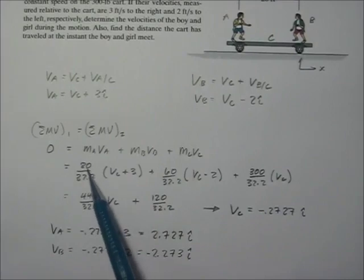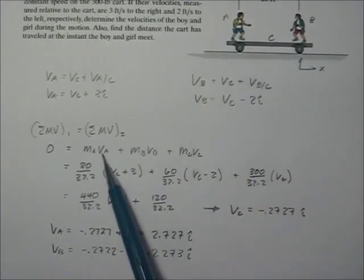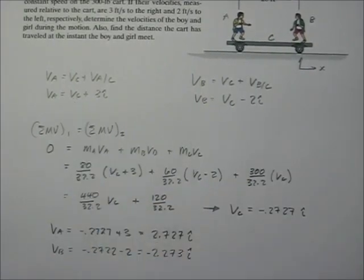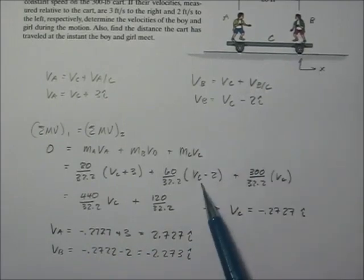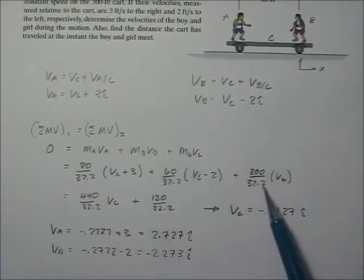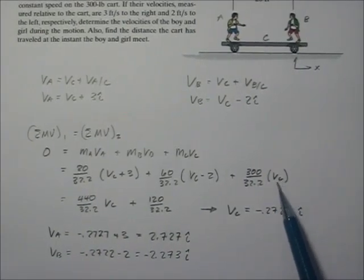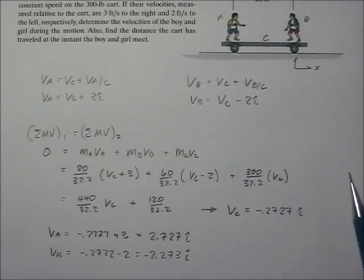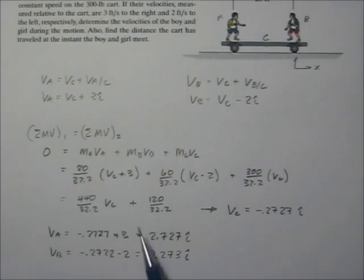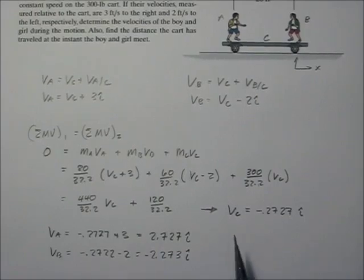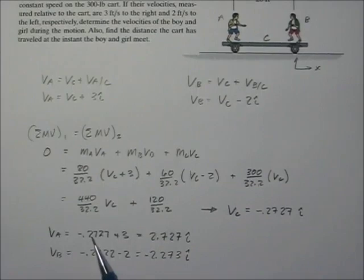We say that the sum of the masses times velocities equals zero. So: the mass of the boy times his velocity from the relative equation, plus the mass of the girl times her velocity from the relative equation, plus the mass of the cart — 300 pounds — times the velocity of the cart, all equals zero. Now I have a third equation. With two relative equations and one momentum equation, I can solve for the velocity of the cart, the velocity of the boy (particle A), and the velocity of the girl (particle B).